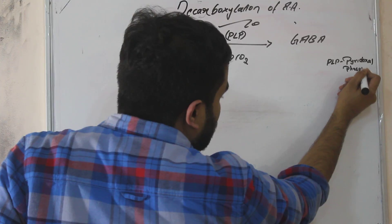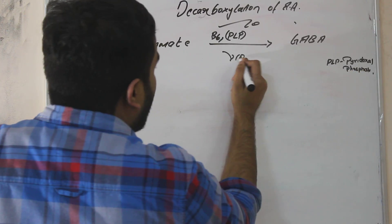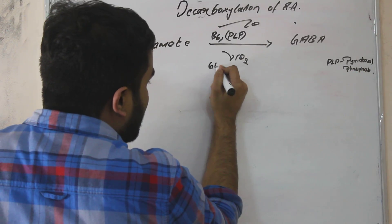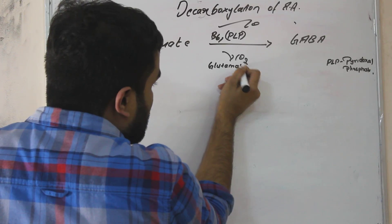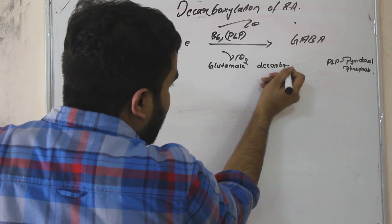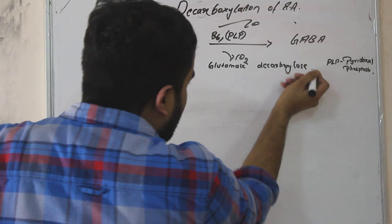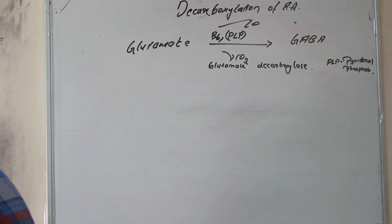Pyridoxal phosphate. So the enzyme here will be glutamate decarboxylase. Glutamate decarboxylase.